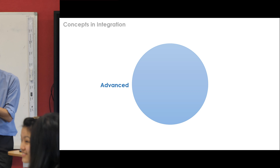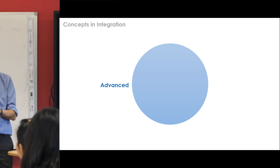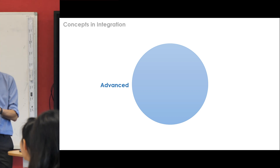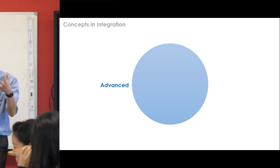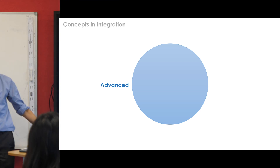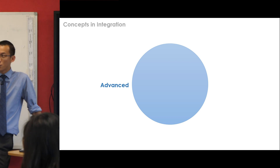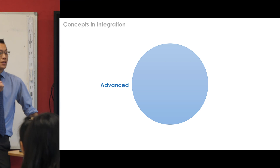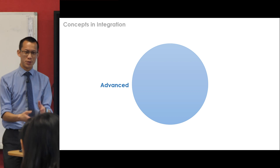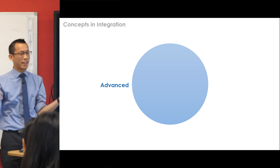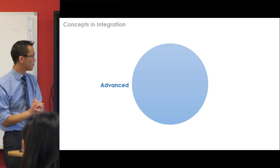3D vectors was also a continuation of vectors — 2D vectors — which we did in Extension 1. Probably the only truly quote-unquote new thing we've done in Extension 2 has been the nature of proof. But even half of the nature of proof was harder mathematical induction, which again is a continuation of mathematical induction.